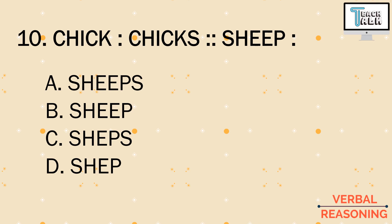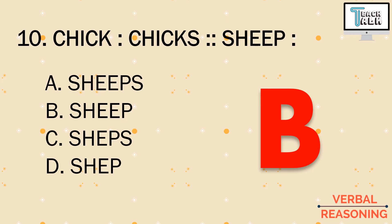Last item, number ten: chick is to cheeks, sheep is to blank. As you can notice, cheeks is just the plural form of chick. So what is the plural form of sheep? Is it a) sheeps, b) sheep, c) sheps, or d) shep? You might automatically answer sheeps, but that's wrong. The plural of sheep is still letter b) sheep. Sheep is one of those irregular nouns where the singular and plural forms are the same word. That's the end of verbal reasoning — see you in our next videos, review well and God bless!